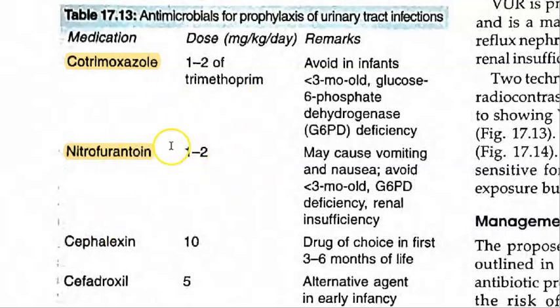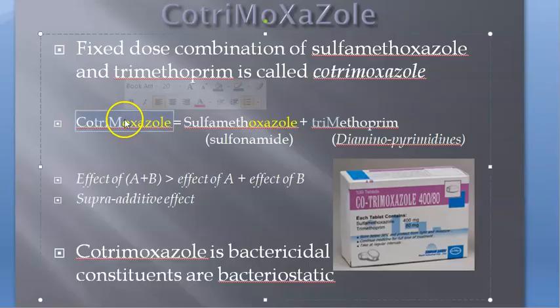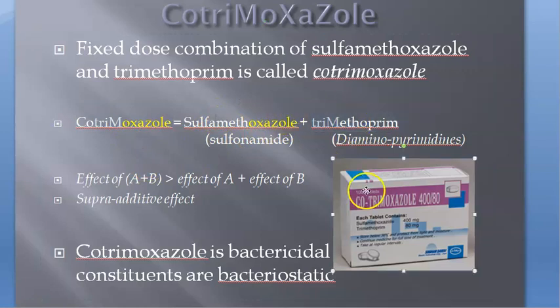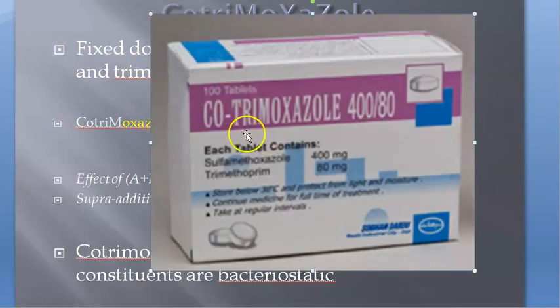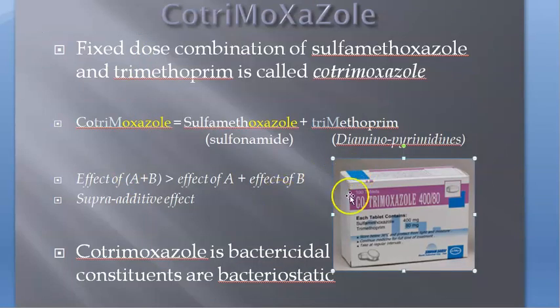Cotrimoxazole is sulfamethoxazole plus trimethoprim. It's 800 mg sulfamethoxazole and 400 mg trimethoprim. You can use Cotrimoxazole as prophylaxis for UTI in children.